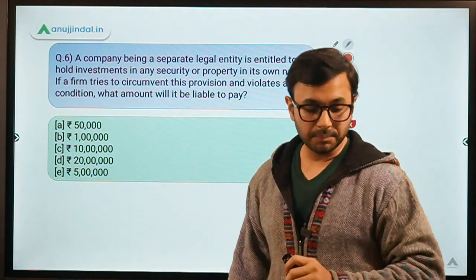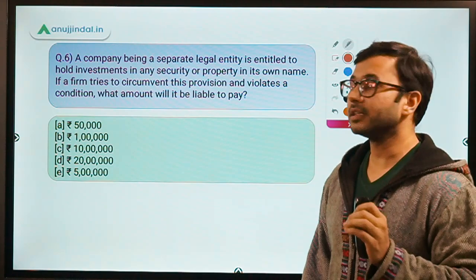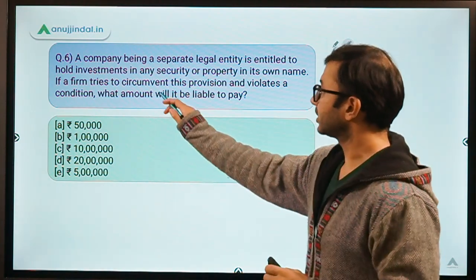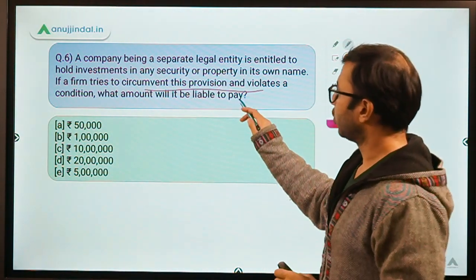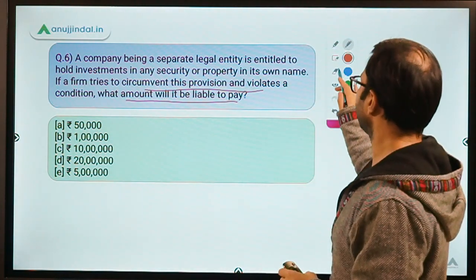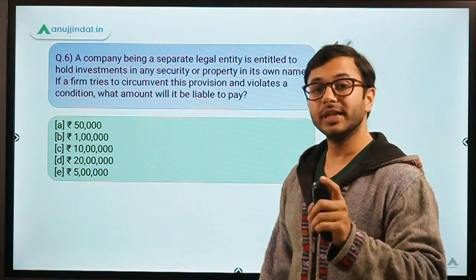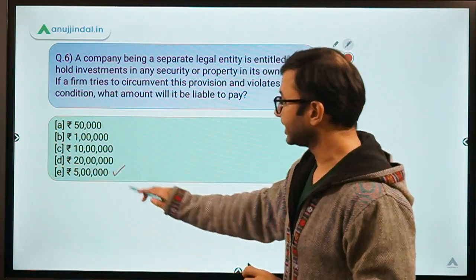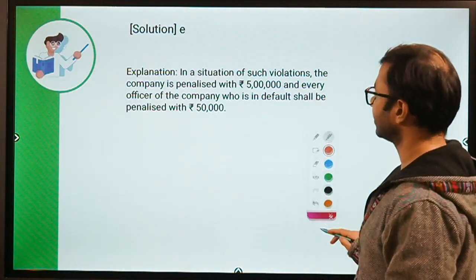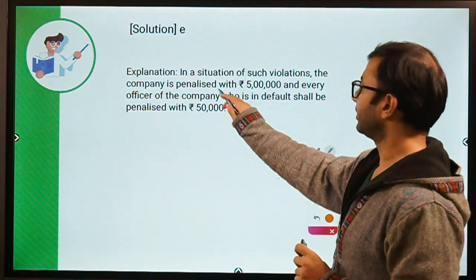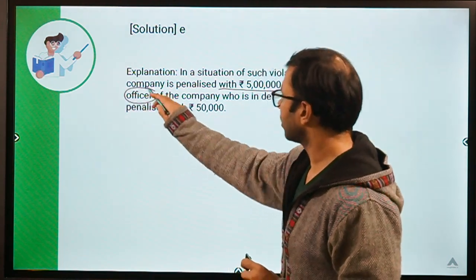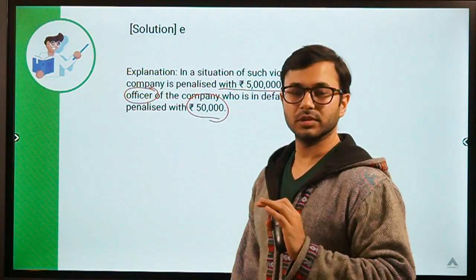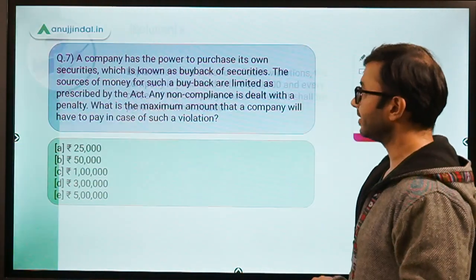Sixth question: a company, being a separate legal entity, is entitled to hold investments in any security or property in its own name. If a firm tries to circumvent this provision and violates the condition, what amount will it be liable to pay? The answer to this question is E — rupees 5 lakh. In a situation of violation, the company is penalized with 5 lakh and every officer of the company who is in default is penalized with 50,000 — which is 10% of 5 lakh. Please remember this.